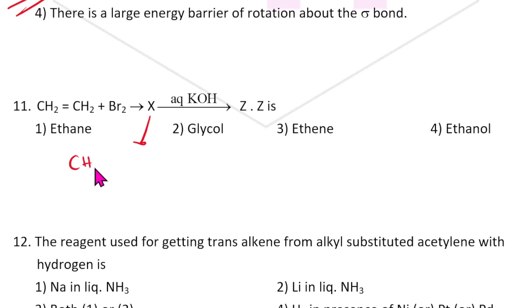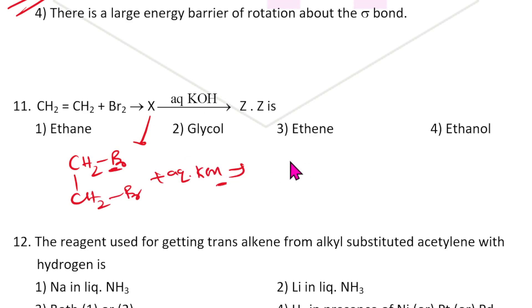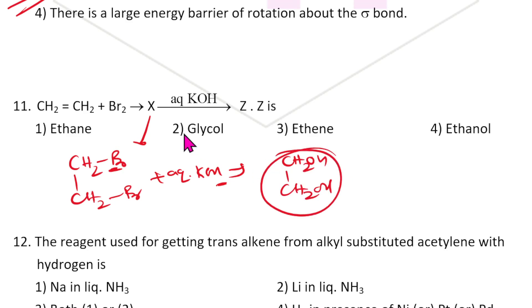CH2=CH2 reacts with Br2 to give CH2Br-CH2Br. Then aqueous KOH reacts with it — bromine is replaced by OH — giving CH2OH-CH2OH. This is glycol.